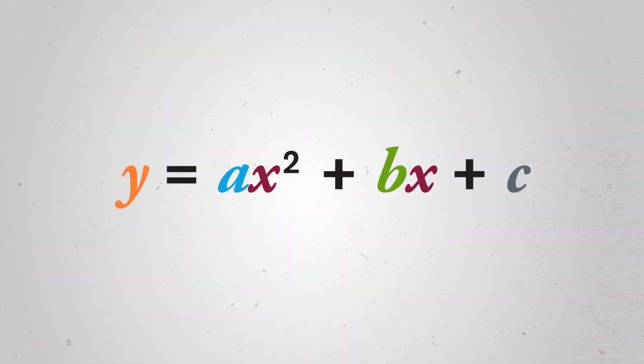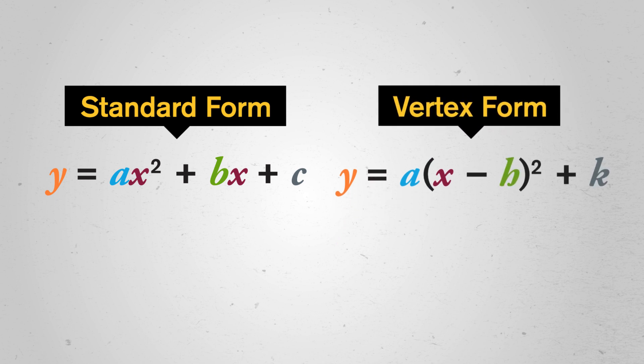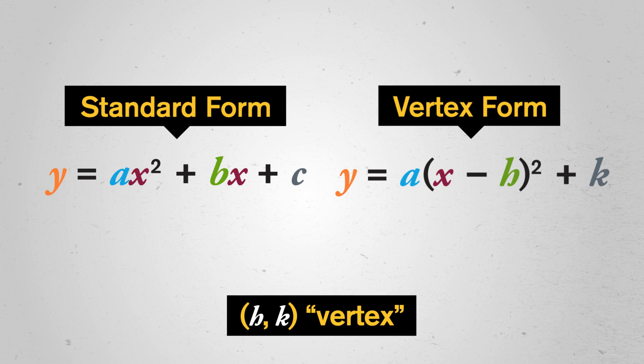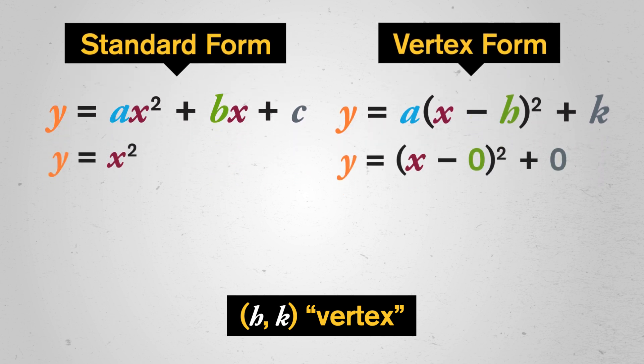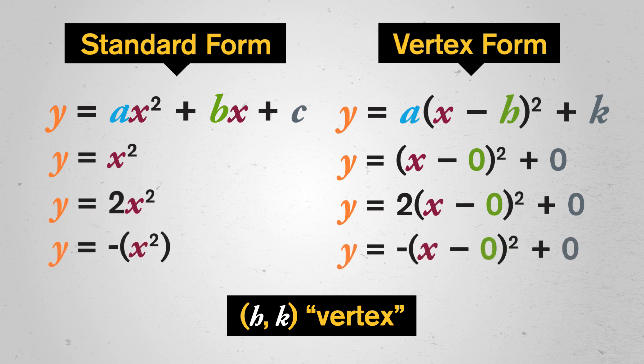The b and c terms must handle the action here. There's actually a way to rewrite quadratic equations to understand what the b and c terms do to our parabola. By completing the square, we can give y equals ax squared plus bx plus c a shiny new look called vertex form. The point h comma k is actually the vertex, and we can read it right off the equation. If we just have an a value – like in y equals x squared, y equals 2x squared, or y equals negative x squared – we can see that h is zero and k is zero, so the vertex for all these parabolas is at the origin.